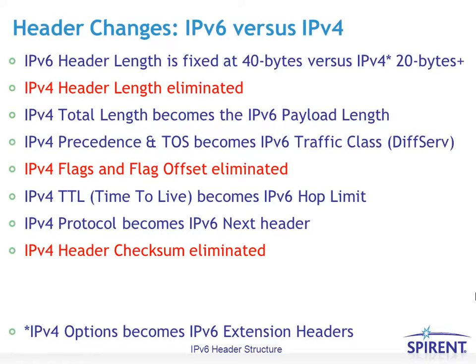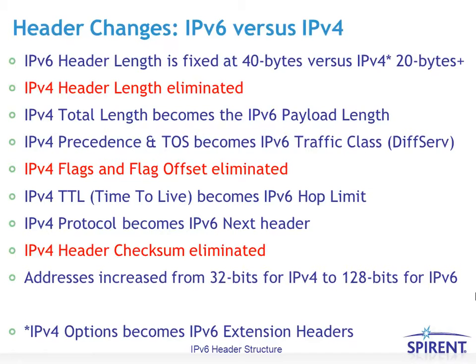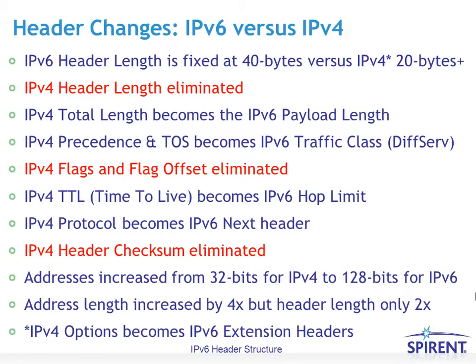The IPv4 header checksum is eliminated. When IPv4 was originally designed, links were considered very unreliable, even to the extent that they might corrupt the IP header. With IPv6, links are considered more reliable and therefore a checksum is not required over the header. The address size increases from 32 bits for IPv4 to 128 bits for IPv6. Overall, the address length increased by 4 times, but the header length only doubled.